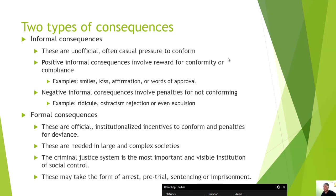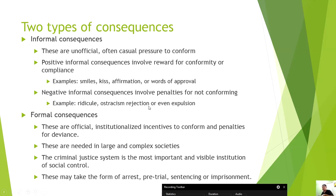Social control operates through informal and formal consequences. Informal consequences are unofficial — no written law or codes. They include casual pressure such as smiles, affirmations, or words of approval as rewards. Negative informal consequences include ridicule, ostracism, and rejection — for example, being ridiculed for talking to yourself in public or being rejected as a foreigner. Formal consequences are institutionalized through laws, codes, orders, and memoranda — needed in large, complex societies.